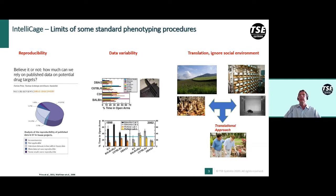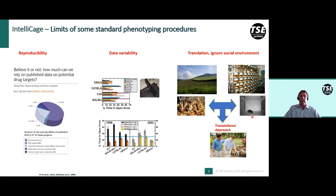What we are all interested in is finding treatment strategies for patients who are mostly not isolated. But what we do in daily research is use social animals — rats and mice — and test them mostly isolated in a totally artificial environment. One of the things the IntelliCage can do is bring back this social component into the lab, and it might help to improve some of these limitations of standard procedures.